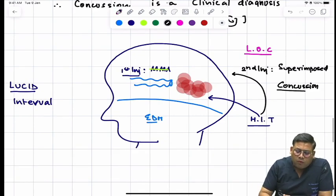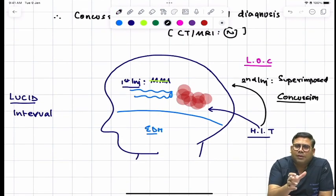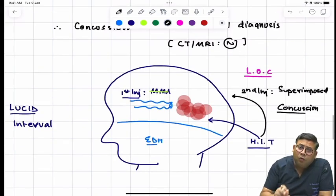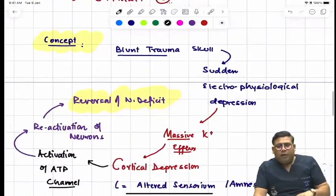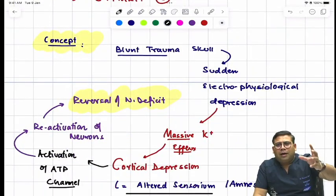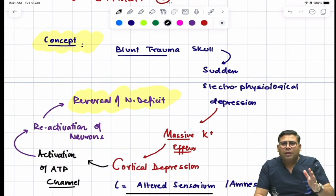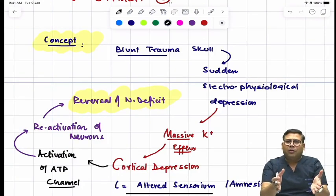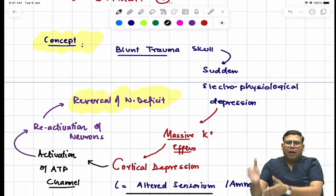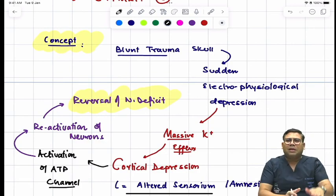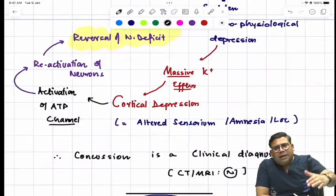So when we talk about the concept of loss of consciousness, this is not due to hematoma, this is due to concussion. Whenever there is blunt trauma due to that, there will be electrophysiological alteration. And whenever there is electrophysiological alteration, there is massive reflux of K+, and when there is massive reflux of K+, there is cortical depression.